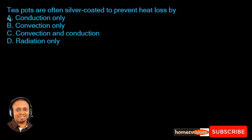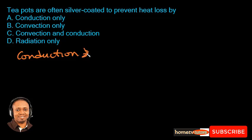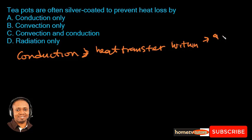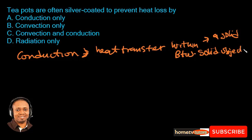This is question 14, JAMB Physics 2018. Teapots are often silver coated to prevent heat loss by — talking about conduction — conduction is the most significant means of heat transfer in a solid, or between a solid and another solid. This does not apply to a pot being silver coated, so conduction is not correct.